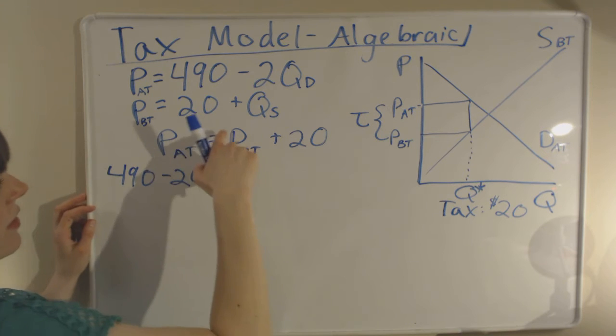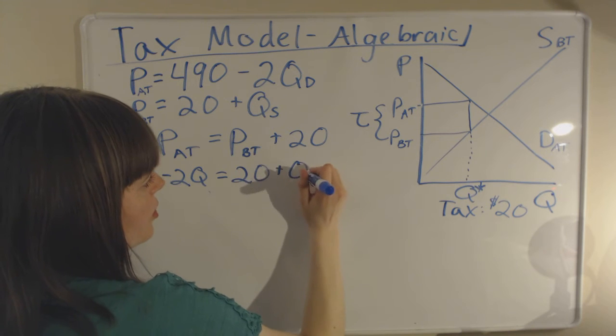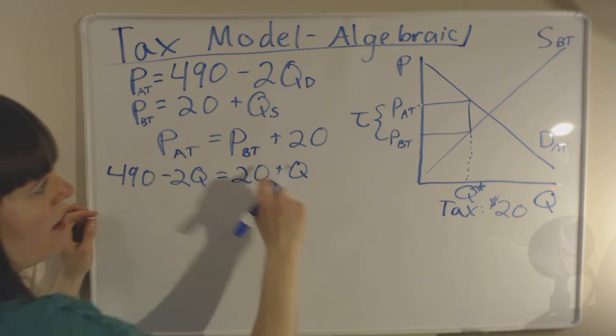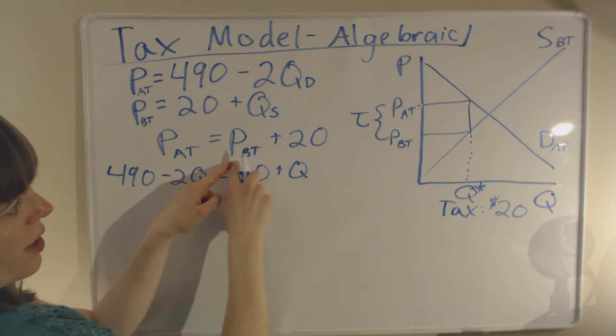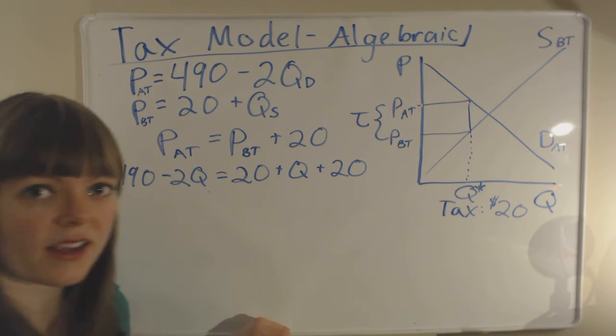Equals, and then let's plug in our before-tax. So let's plug in 20 plus Q, our quantity. So we've plugged that in for the price before-tax, and now we need to finish our equation plus 20 plus that tax.